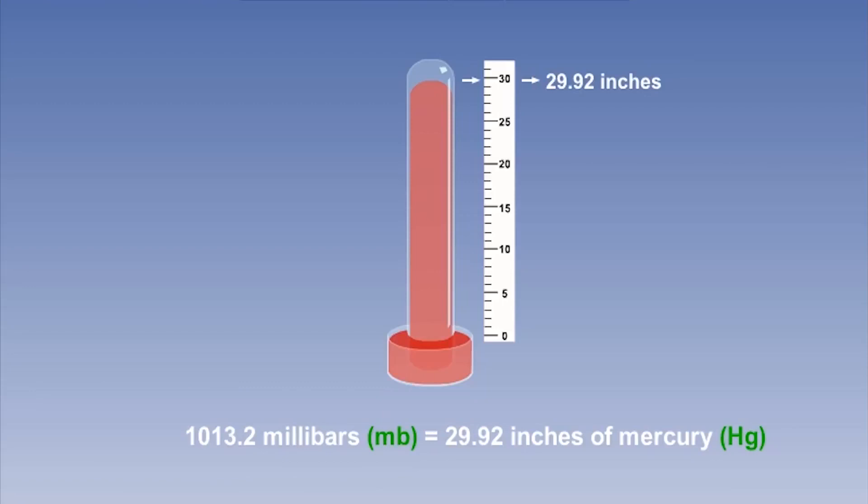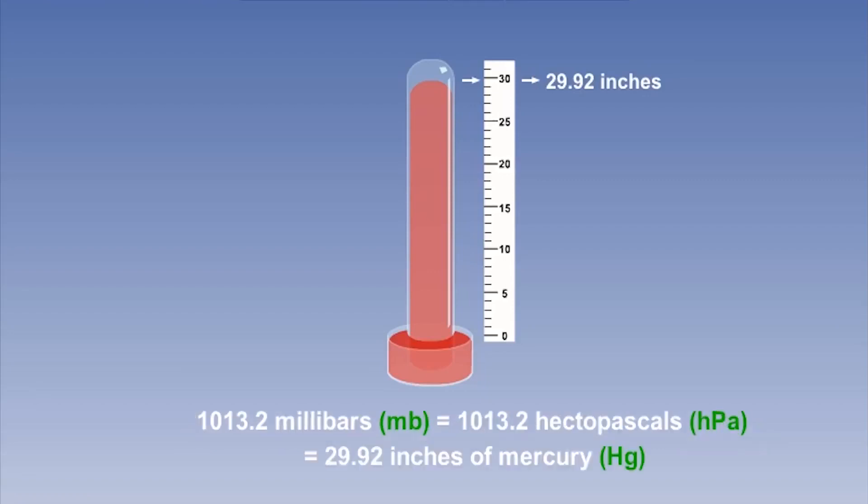In recent years, the adoption of the metric hectopascal has been replacing the millibar. However, do not worry, because the hectopascal and the millibar use the same scale. 1013.2 millibars is also 1013.2 hectopascals. In summary, then, 29.92 inches of mercury is the same as 1013.2 millibars and 1013.2 hectopascals.